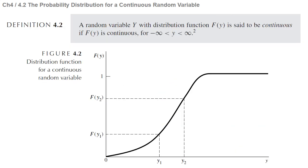Definition 4.2: A random variable Y with distribution function F(y) is said to be continuous if F(y) is continuous for all y on the domain from minus infinity to infinity. The graph of a continuous distribution function is a continuous increasing curve, starting at 0.